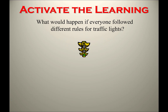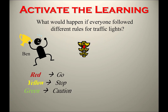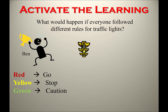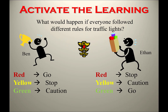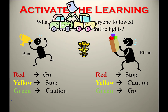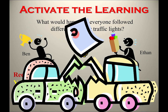So what happens if everyone follows different rules? Take traffic lights, for example. Maybe we have Ben who, when he sees red, he goes; when he sees yellow, he stops; when he sees green, he slows down or comes to a stop. Then you have Ethan who follows the normal rules: red means stop, yellow means caution, and green means go. If everybody's following different rules, we probably end up with some sort of accident.